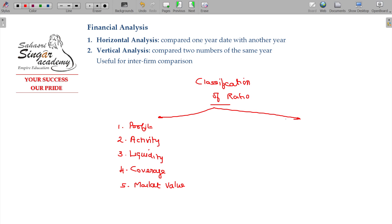Apart from that, the second part - we have two broader classifications. One is all about horizontal analysis, another one is vertical analysis. Vertical analysis compares two numbers of the same year.